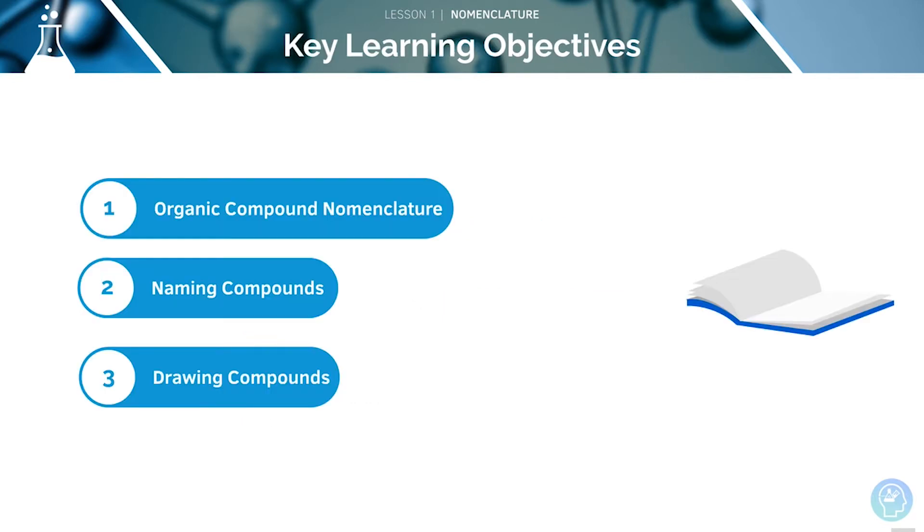Here are the key learning objectives for this tutorial. First, we will look at nomenclature, then at naming compounds and finally at drawing them.